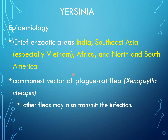Yersinia pestis is quite endemic in areas of India, Southeast Asia especially Vietnam, Africa, and northern South America. The commonest vector for this bacteria is Xenopsylla cheopis (the rat flea), but other fleas may also transmit this infection.